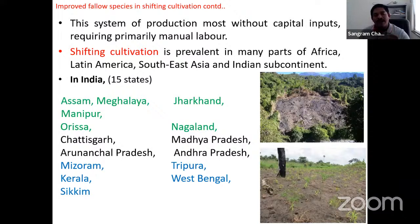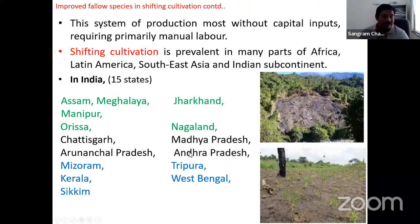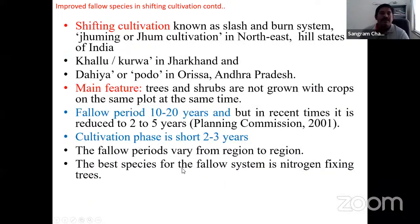Fallow means keeping land without cultivation. Shifting cultivation is mainly prevalent in northeast India but also in Africa, Southeast Asia, and the Indian subcontinent. In India it is distributed in more than 15 states including Assam, Manipur, Odisha, Chhattisgarh, Mizoram, Jharkhand, parts of Madhya Pradesh, and Nagaland. Shifting cultivation is known as Jhum or Jhuming in northeast India, Ghalud in Jharkhand, Kumri in Tamil Nadu, and Podo cultivation in Odisha/Andhra Pradesh.